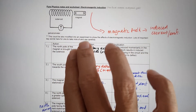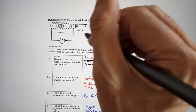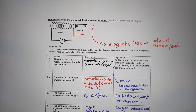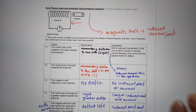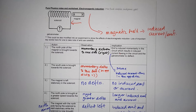A typical situation is like this: when a magnet is moved towards the solenoid or moved away, what do you observe? You will see a momentary deflection in a galvanometer, either to the left or to the right. This implies there is an induced EMF or induced current flowing in the circuit.